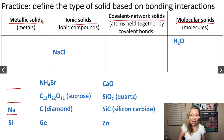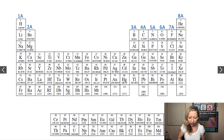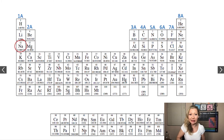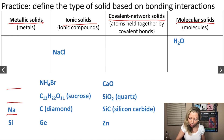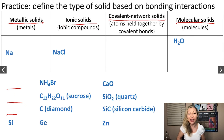What's next? Sodium, Na. What is it? We can check the periodic table. Sodium is right here — it is definitely a metal, so we are going to have a metallic solid.